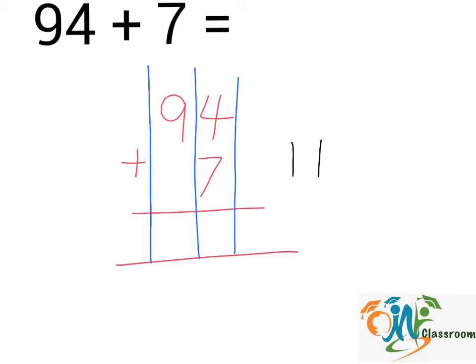We will write down the number on the right here, and the number on the left, we will shift it to the second column. Now, we will add up the numbers in the second column.